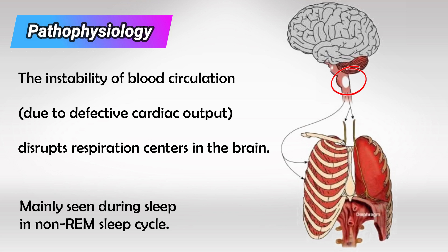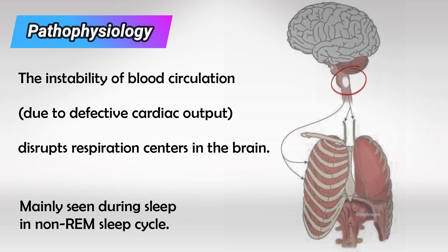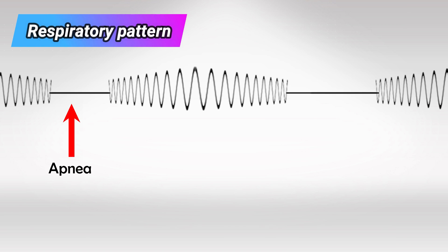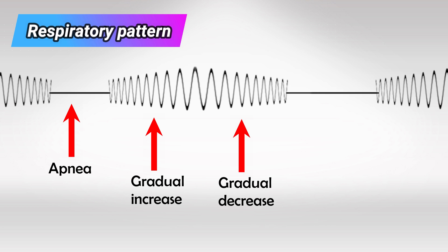We see it mainly in deep sleep or comatose patients. Cheyne-Stokes breathing pattern is described as a period of apnea, followed by a gradual increase and decrease, and then another episode of apnea.